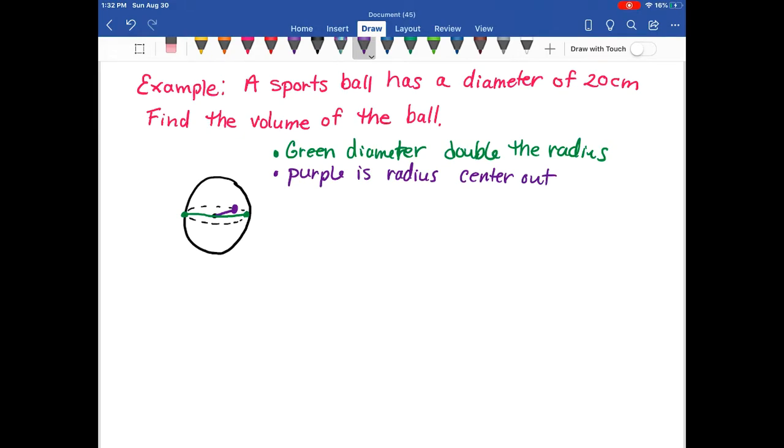In this example, they tell us that the diameter of the ball is 20 centimeters. So that means all the way across from side to side is 20 centimeters. To figure out what the radius is, we know the radius is half of that, it's just from the center out, so that's going to be 10 centimeters.